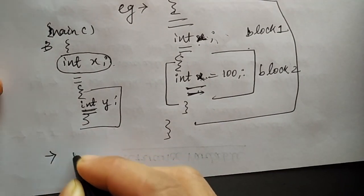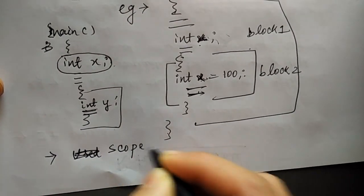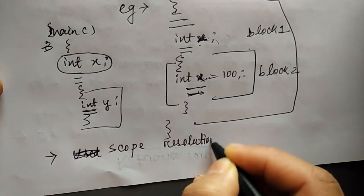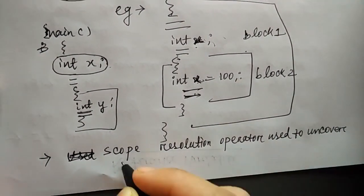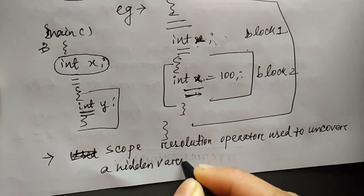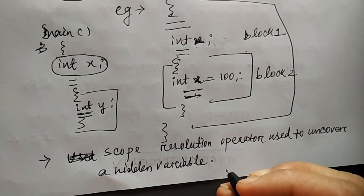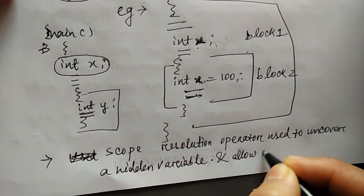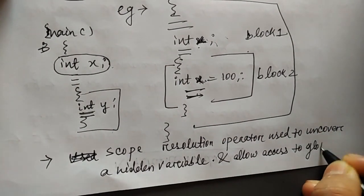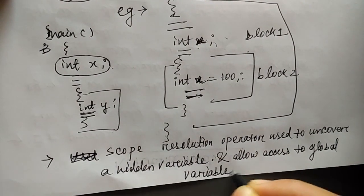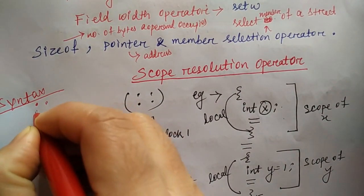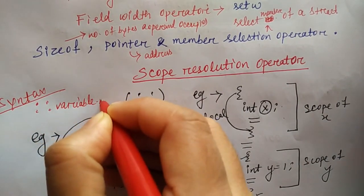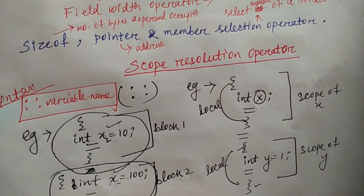The scope resolution operator is used to uncover a hidden variable and it allows access to the global variable, which is not possible in C. The syntax is: the scope resolution operator symbol (::) followed by the variable name. We will see a program demonstrating this in the next video.